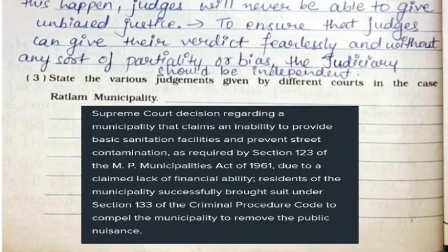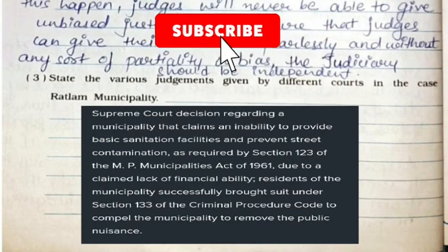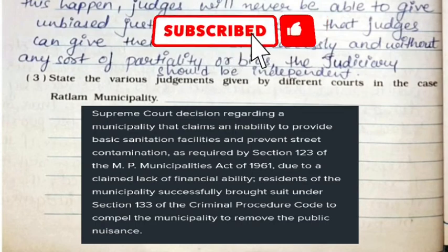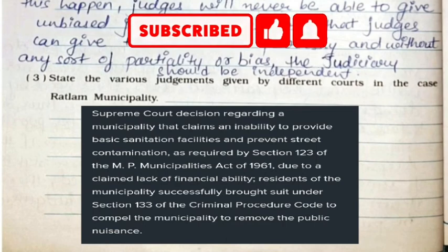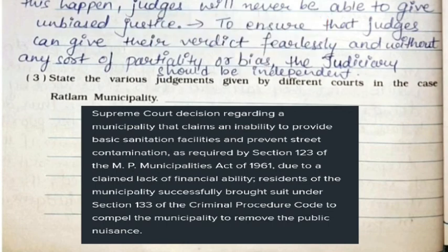Third: state the various judgments given by different courts in the case of Ratlam municipality. The Supreme Court ruled regarding a municipality that claimed an inability to provide basic sanitation facilities and prevent street contamination as required by Section 123 of the MP Municipalities Act of 1961. Due to a claimed lack of financial ability, residents successfully brought suit under Section 133 of the Criminal Procedure Code to compel the municipality to remove the public nuisance.